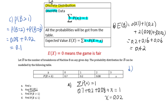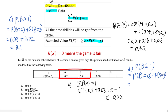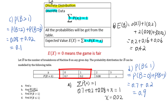For part D, find the probability of B less than or equal to 1, which means probability of B equals 0 plus probability of B equals 1, giving us 0.7 plus 0.2 equals 0.9.